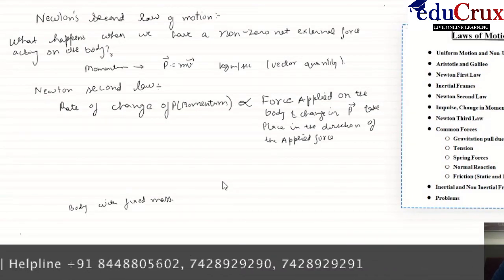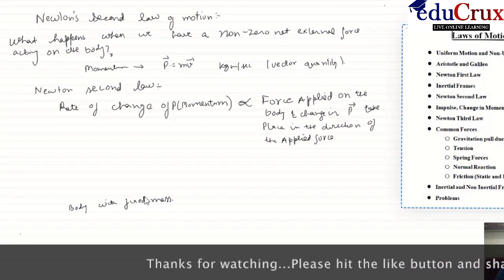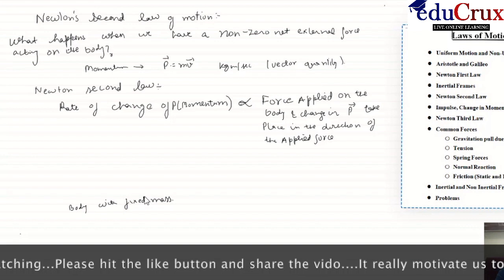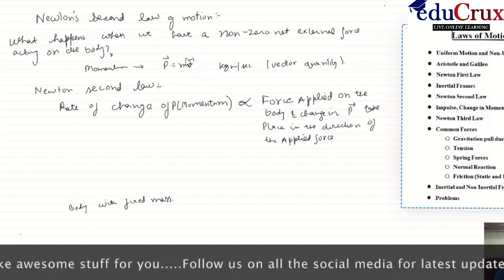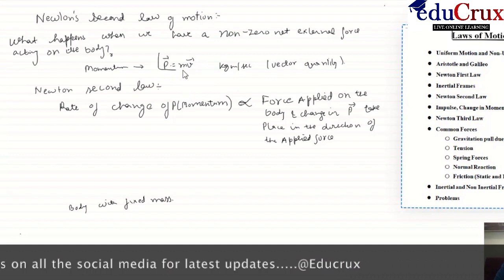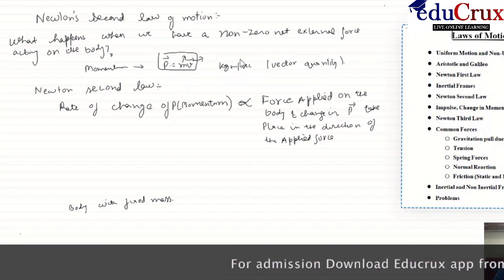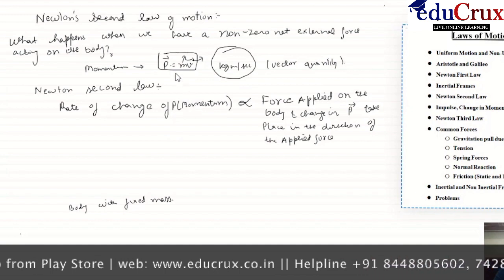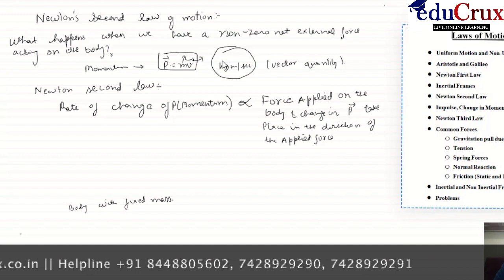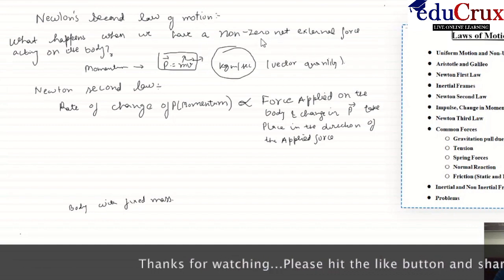Now we will discuss Newton's second law. Newton's second law basically handles a more generalized quantitative form of the first law, discussing what happens when a non-zero force acts on a body. According to Newton's second law, we first define the quantity momentum. Momentum is defined as p equals mv, where v is the velocity of the body and m is its mass. Momentum is also a vector quantity — it has a direction and a magnitude — and the unit of momentum is kg·m/s.